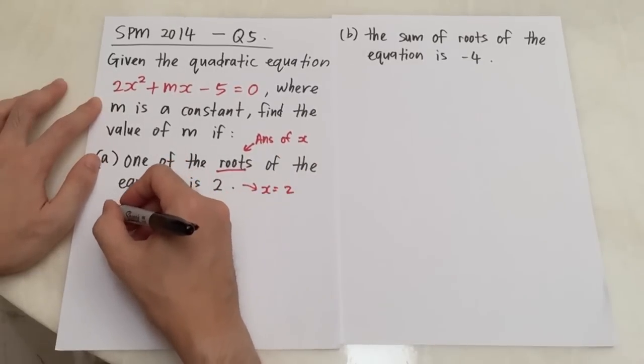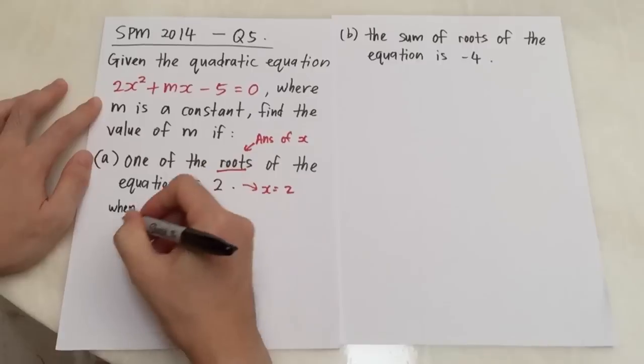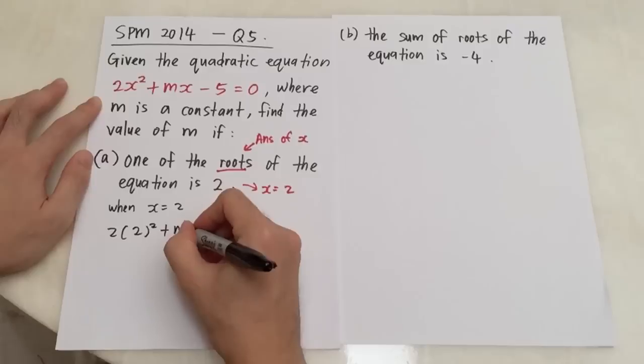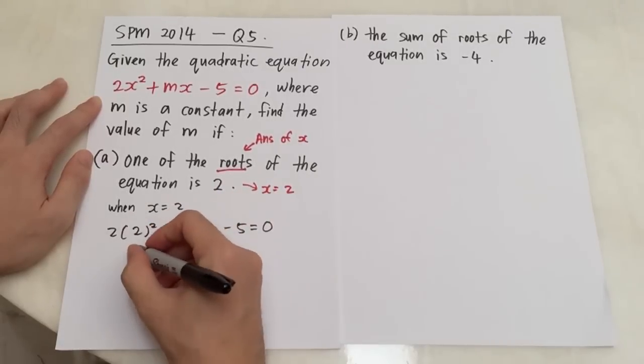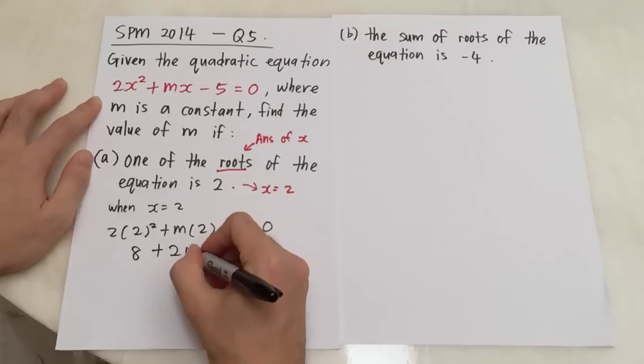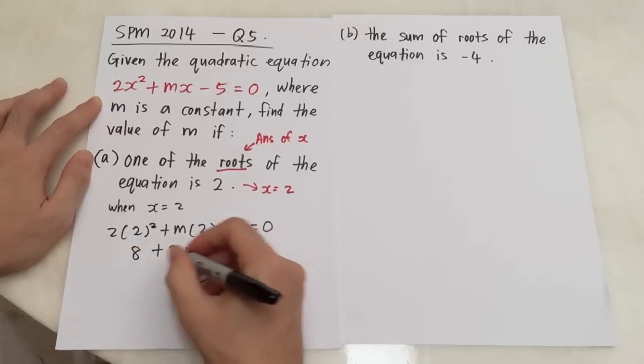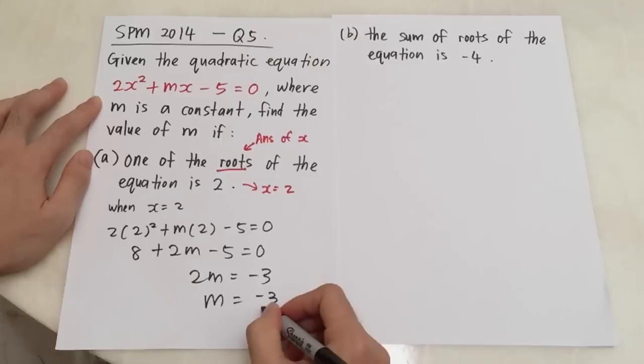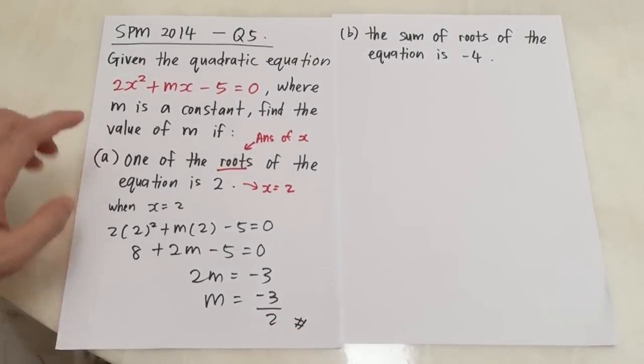So what I will do is, if I know x equals to 2, when x equals to 2, so my 2x squared plus mx minus 5 equals to 0. So this is 2 times 2 squared is 8 plus 2m minus 5 is 0. Then 2m will equal to negative 3. m will equal to negative 3 over 2.